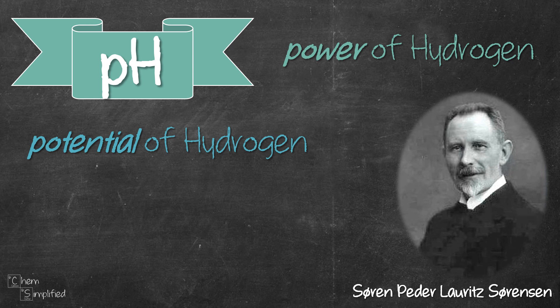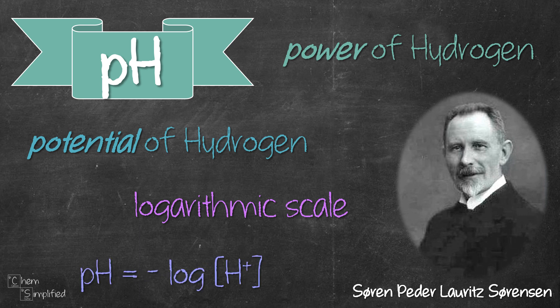Regardless of what P stands for, pH is a log scale that is used to determine if an aqueous solution is acidic or basic. In fact, it's related to the concentration of hydrogen ion through this formula.